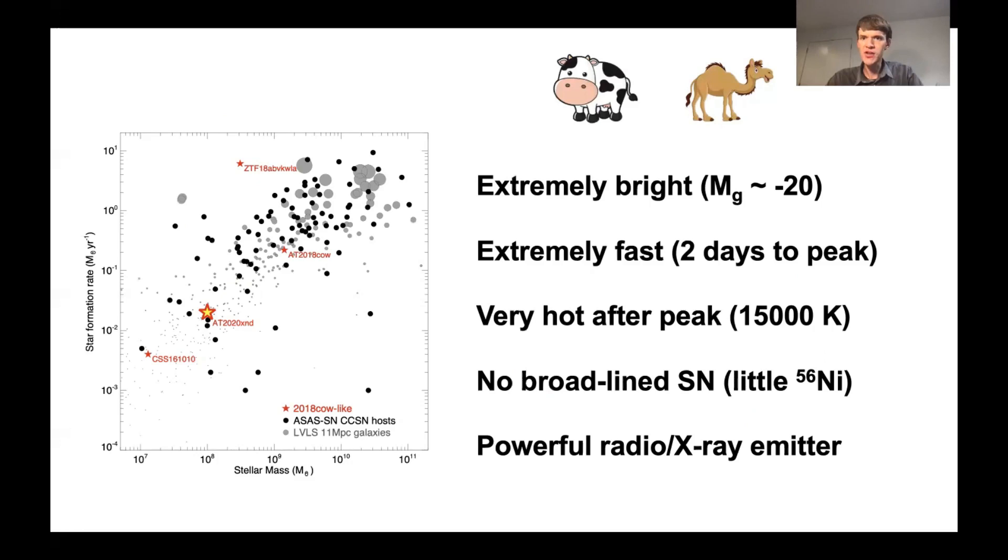So based on this, we conclude that in fact all the interesting key features of AT2018COW are indeed also seen in other transients, at least sometimes. The bright peak magnitude, the very fast rise to peak, the high temperature after peak, the lack of a broad-line supernova that indicates a limited amount of radioactive nickel production, and the powerful radio and X-ray emission are all common to at least these two transients and probably are indicative that this is a broader class of events.